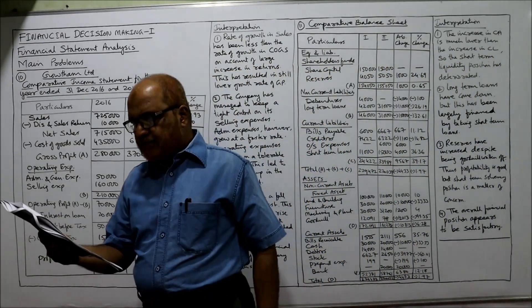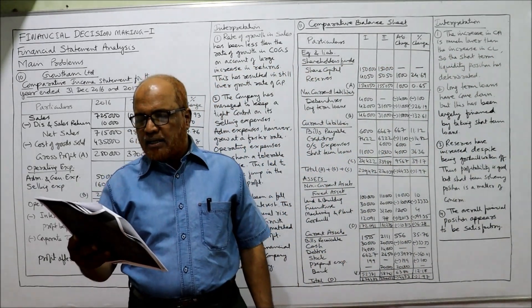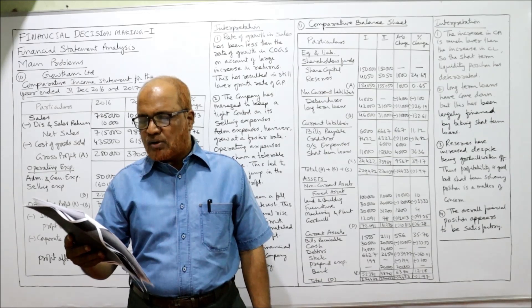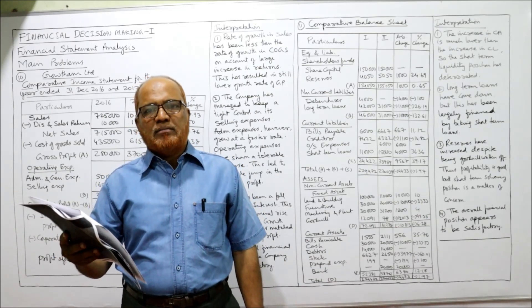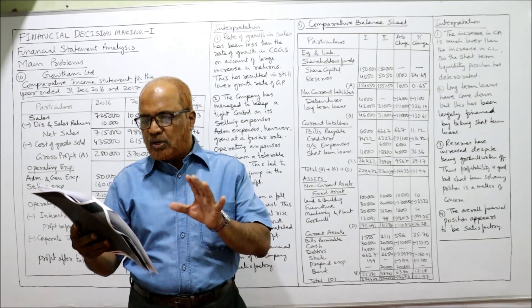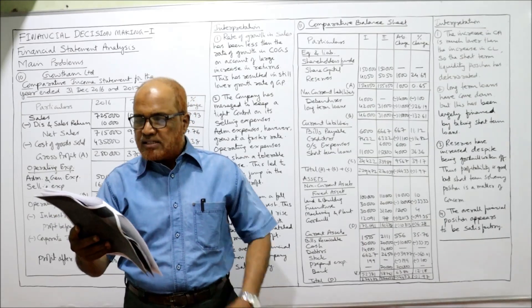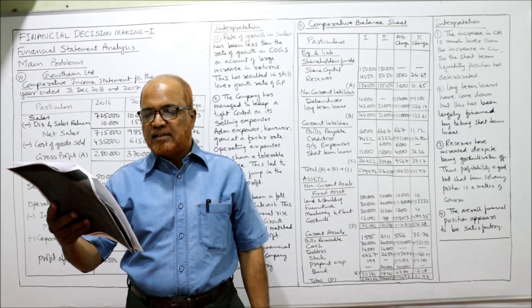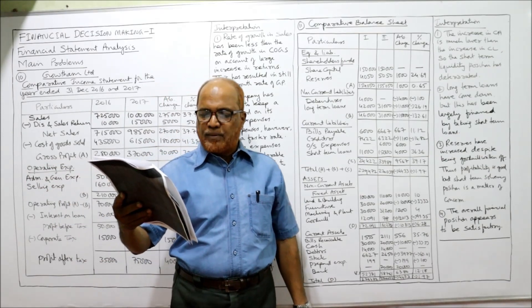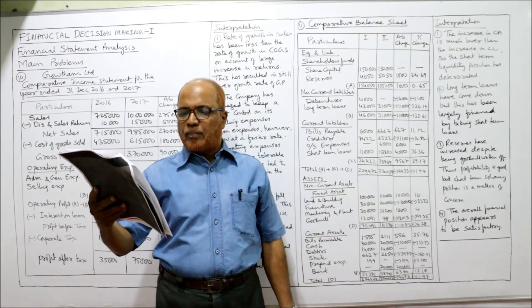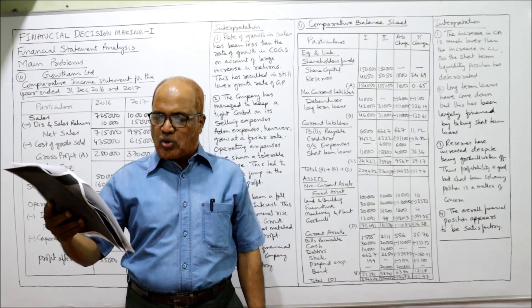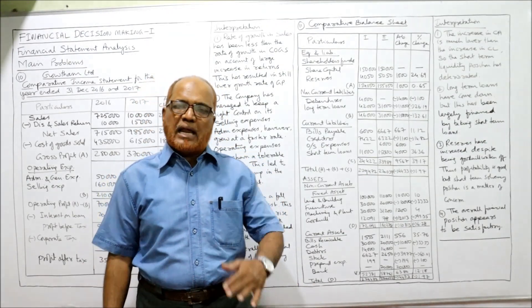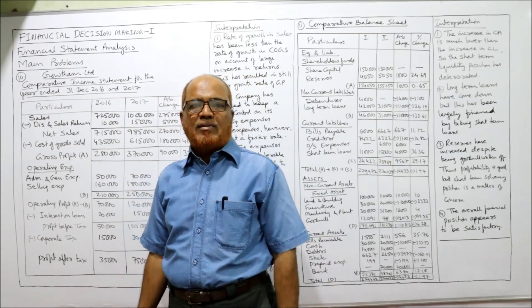See the 10th problem: the income statement of Gautam Limited is given for the years 2016 and 2017. Prepare a comparative statement, analyze and interpret the significance of changes. Two statements are given with data for 2016 and 2017 — last year is 2016, current year is 2017. The data covers: sales minus sales returns, net sales, cost of goods sold, gross profit, administrative and general expense, selling expense, net operating profit, interest on loan, net profit before tax, corporate tax, and net profit after tax.